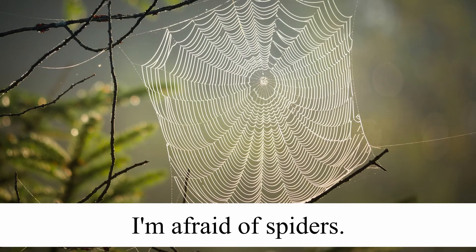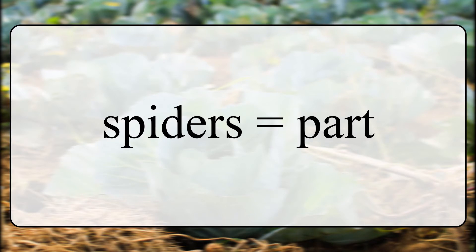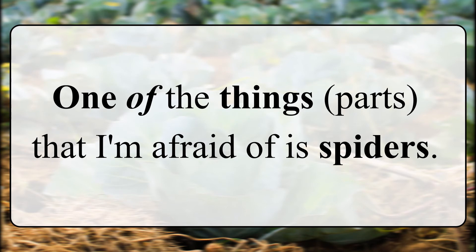'I'm afraid of spiders.' My fear is not part of spiders. However, spiders are the content of my fear. Notice that if I have more than one fear, we can say spiders are one part of my fear. So in this case we also have a part, but part goes the opposite direction than normal. Normally part is A to B and content is B to A, but in this case both part and content are B to A. Notice we can say 'one of the things I'm afraid of is spiders.' The logic still works perfectly fine.